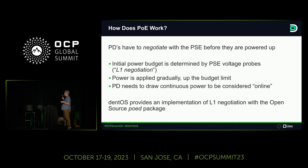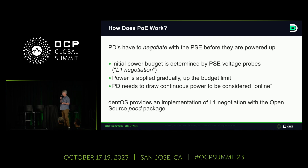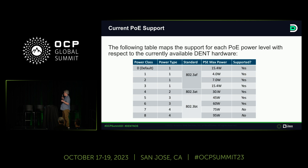For PoE to work, it's like connecting your iPhone to a power cable — it does some voltage probes at the beginning, called L1 negotiation. A given device negotiates at a specific level, saying 'I need this much power,' and then the PSE — the server providing the power — assigns a budget. There are different power levels governed by different parts of the IEEE spec, and we have devices in the field going all the way up to Type 3, which is up to 60 watts per port.